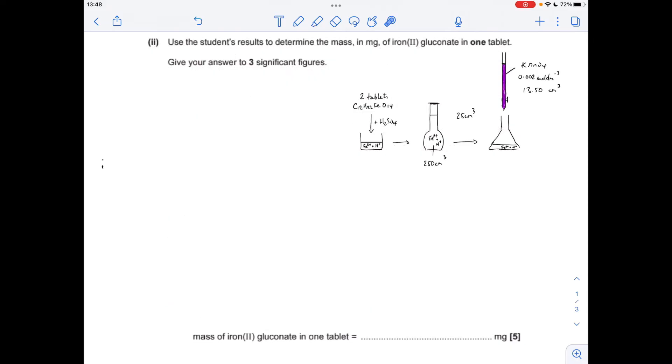Okay so moving on to the calculations I've got my trusted diagrams to help me explain what's going on. So they've taken two tablets, that's the formula of the chemical in the tablet. The iron 2 has obviously gone to Fe2+ aqueous when the sulphuric acid's gone in.